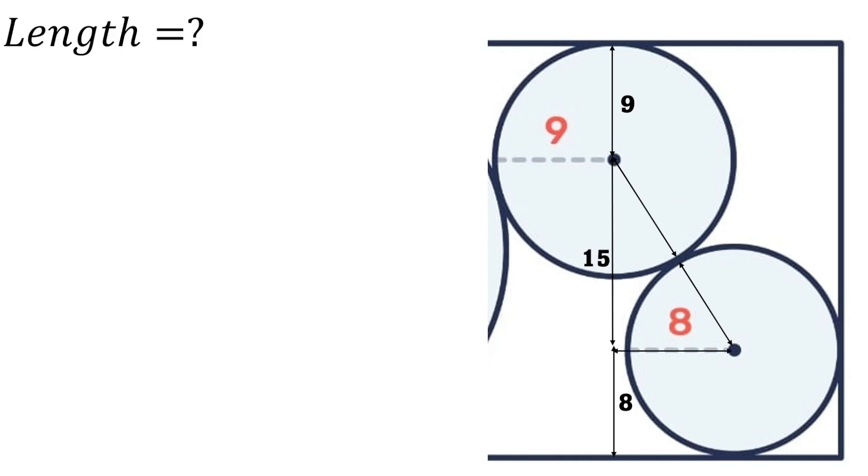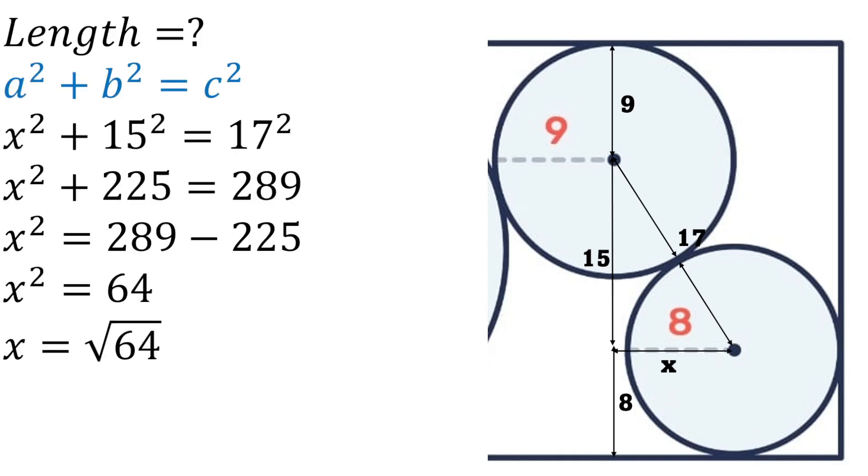We're looking for our x at the bottom, but the hypotenuse is 17, which was the 8 plus the 9. So again, using Pythagoras's theorem, we get that x is the square root of 64, which is 8.